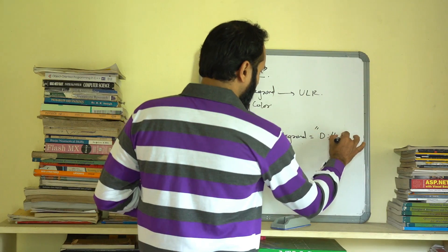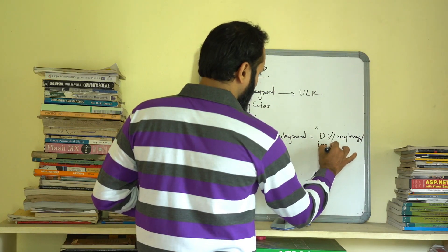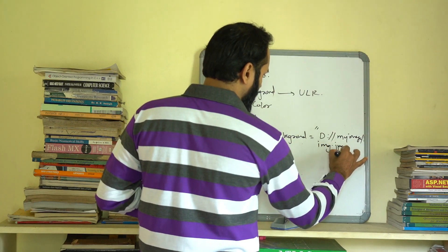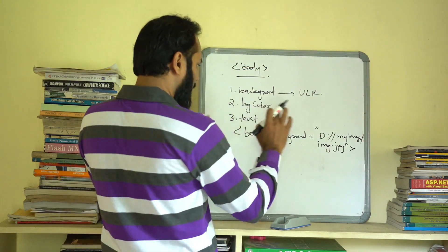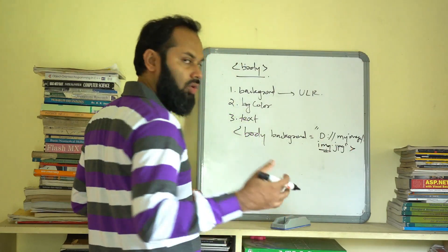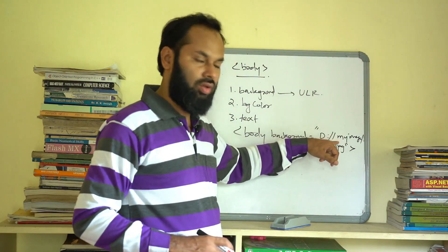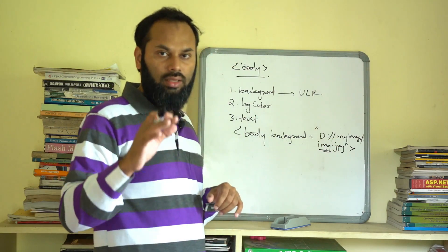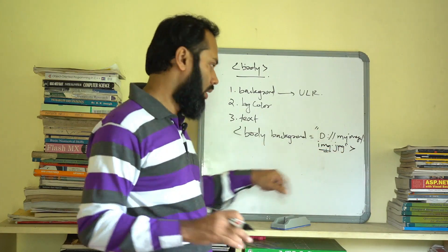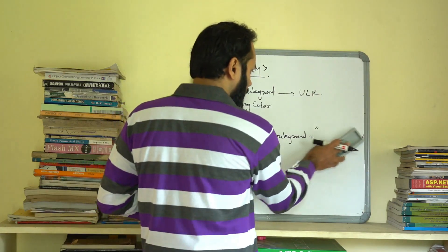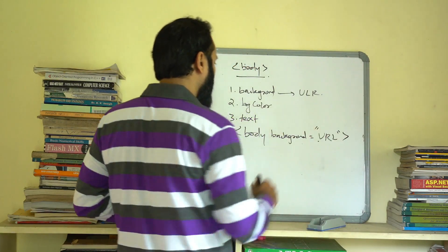For example, the path is D:/my images/img.jpg. You can use the file extension. If you right-click and check the image properties, you can get the URL for that image and use it as the background image URL in the body tag.